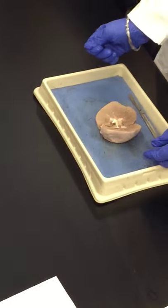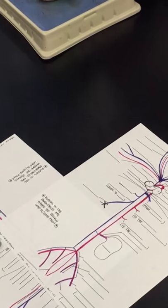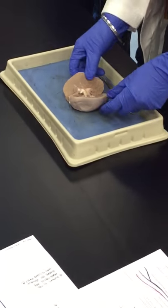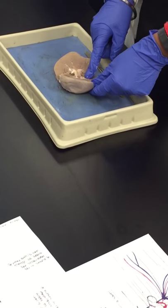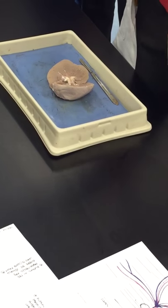When I cut open the kidney, I have this outer layer - the kidney is divided into two layers. Cortex and medulla: the outer cortex and the inner medulla.